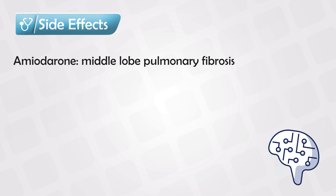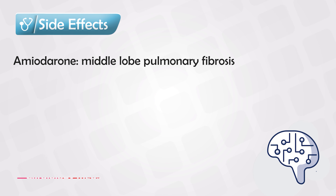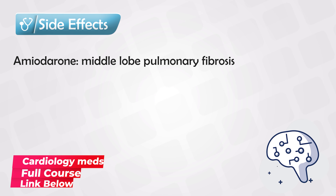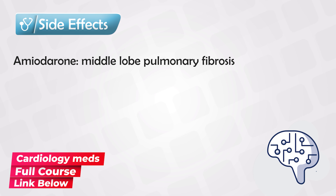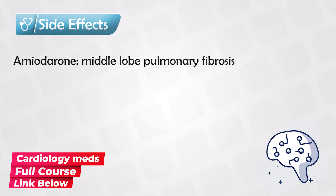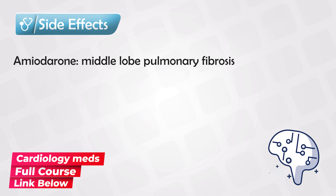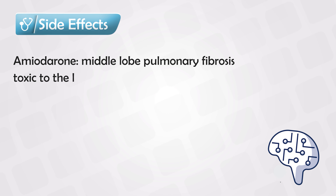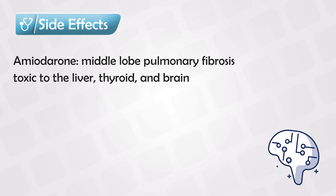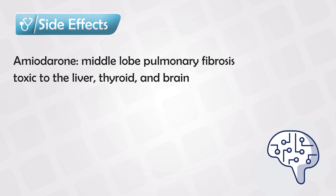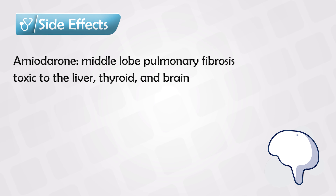Amiodarone can cause lung fibrosis that starts in the middle lobe, and this is especially true if the patient takes the medication for a long time, usually more than 3 months. It's also hepatotoxic. About 40% of the drug itself is iodine, so it can cause hyper or hypothyroidism.